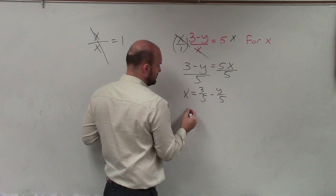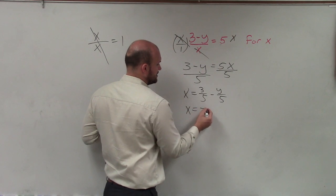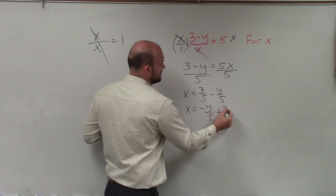Now, a lot of times we like to write our variable in front, so I can have x equals negative y over 5 plus 3 fifths.